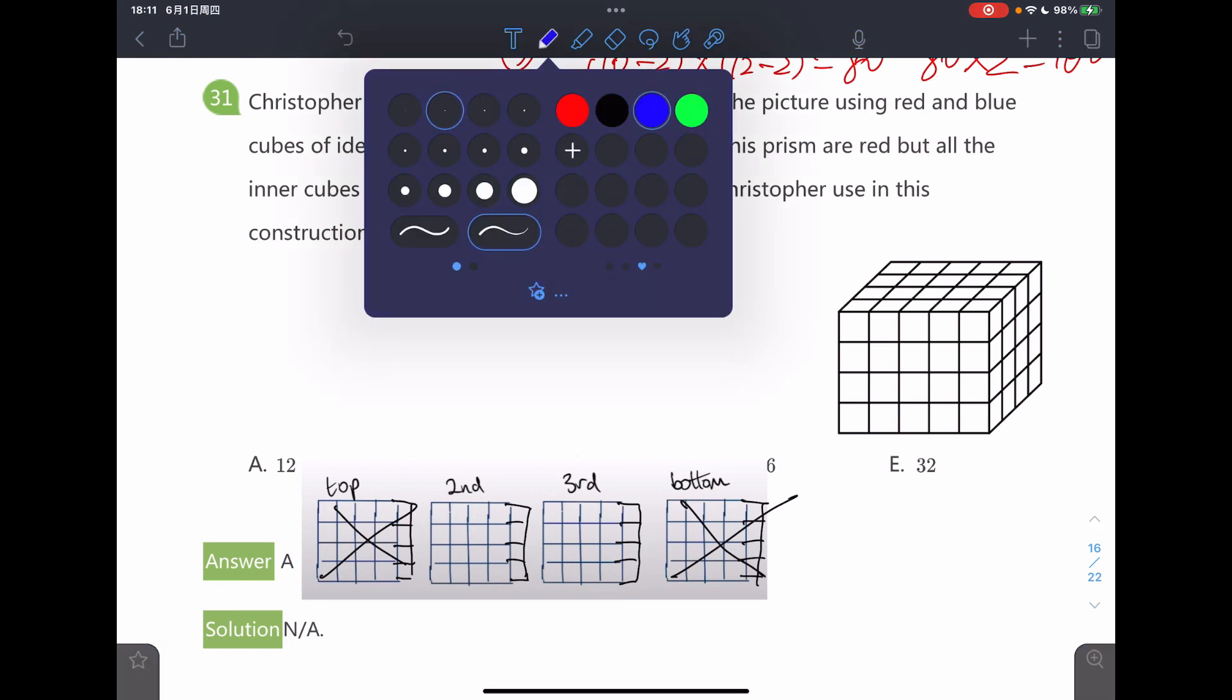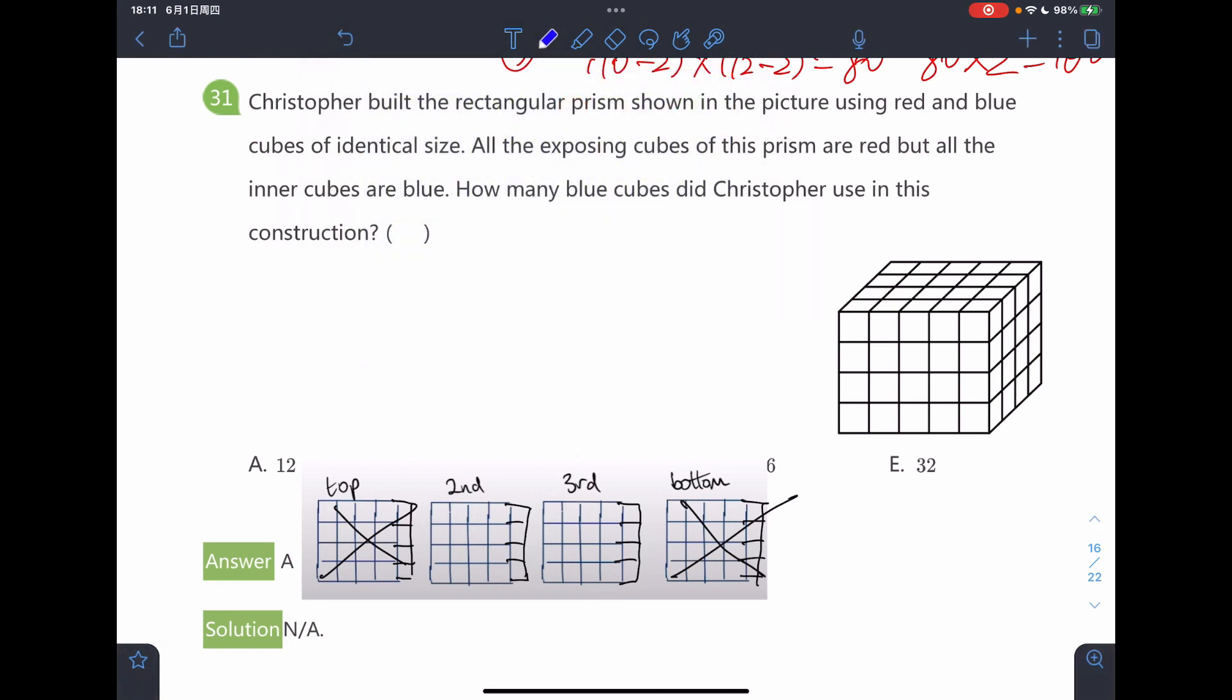Now we can look at the second layer and third layer. The outer cubes at these layers will be painted red, so all of the outer cubes will be painted as red.